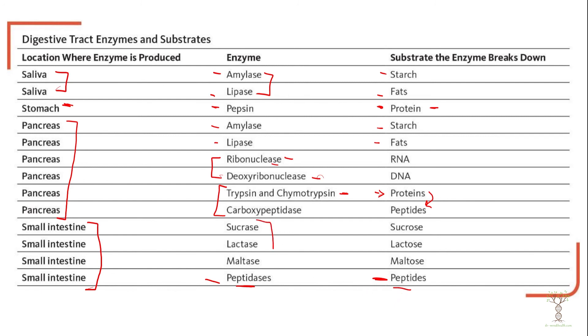The sugar-digesting enzymes are named by the sugar they break down: sucrose is broken down by sucrase, lactose is broken down by lactase, and maltose is broken down by maltase. When a name ends in -ase, you know it's an enzyme; when it ends in -ose, you know it's a sugar. Those are the enzymes we use to break down our macromolecule foods into the nutrients we will absorb. In the next video we'll look at the details of how we absorb different nutrients in the digestive tract.